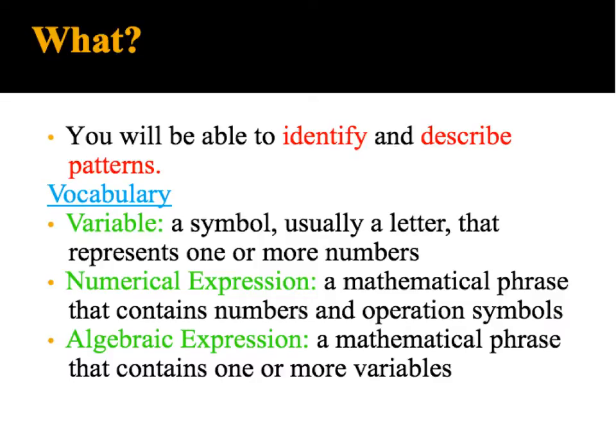And as we learn how to identify and describe patterns, we have some vocabulary that goes with that. First of all, as a review, a variable is a symbol, usually a letter like x, y, or z, that represents one or more numbers. A numerical expression is a mathematical phrase that contains only numbers and operations, so there are no variables in a numerical expression. An algebraic expression, however, does have variables.